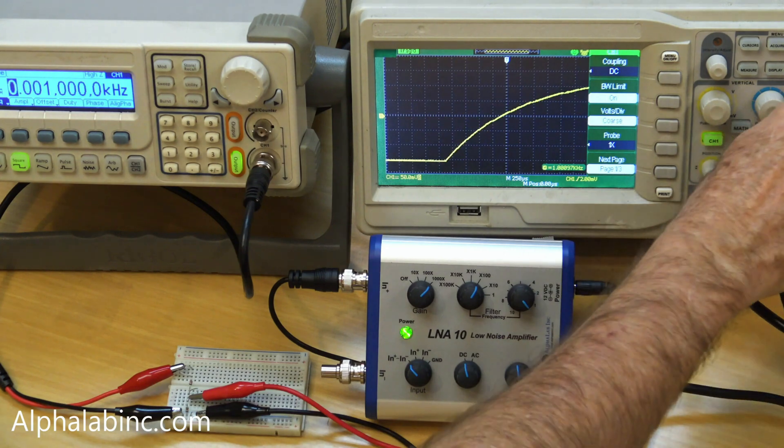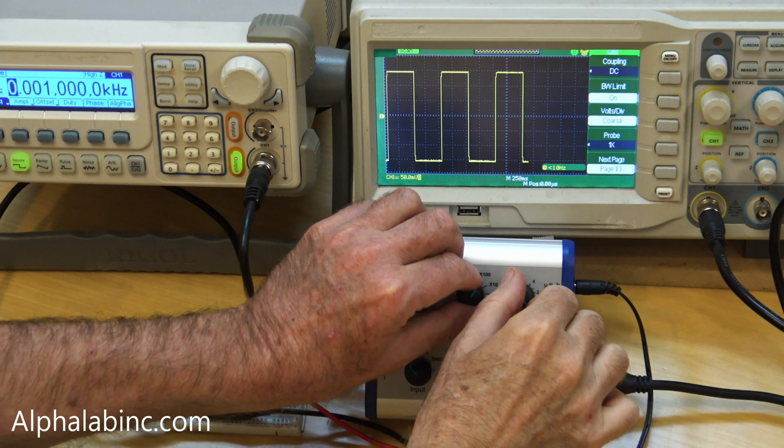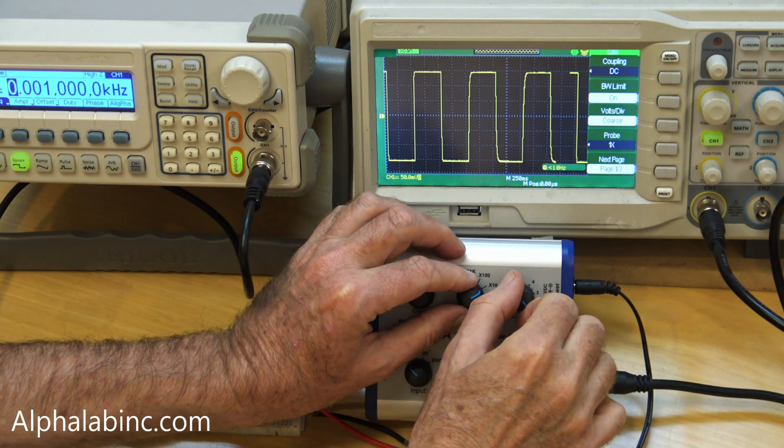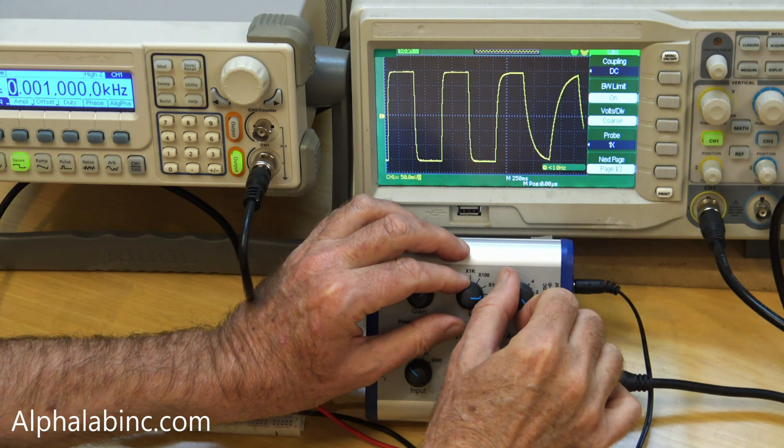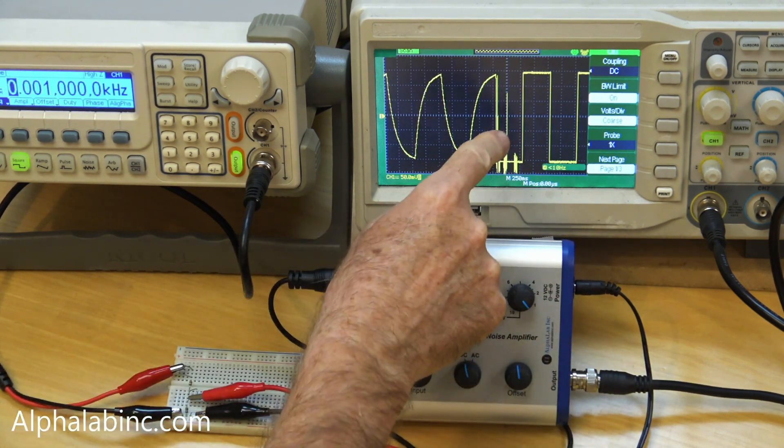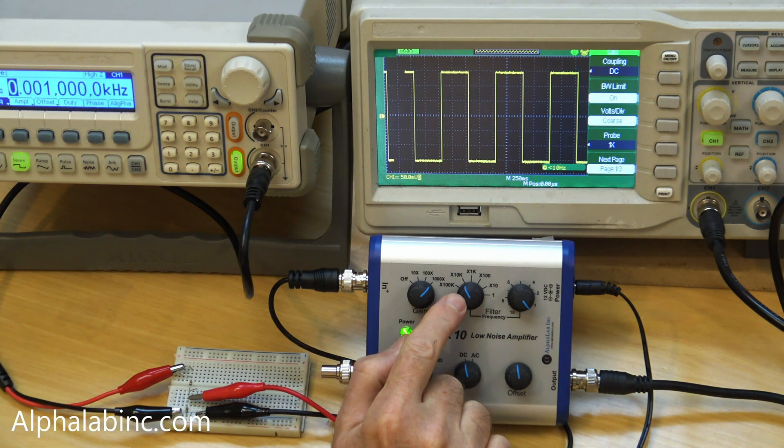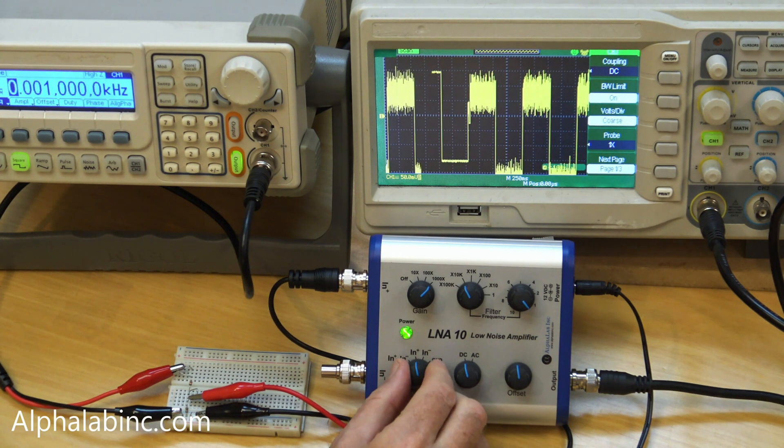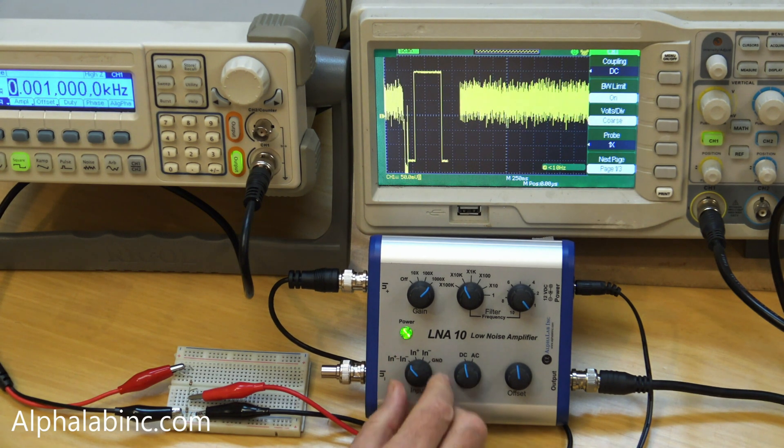Switching to a 1 hertz square wave. This is a 3 millivolt peak-to-peak square wave at 1 hertz. With the filter set at 10 kilohertz, this is the amplified positive input, the amplified ground, and the differential amplification.